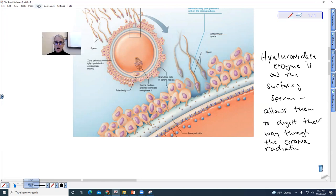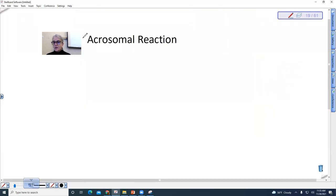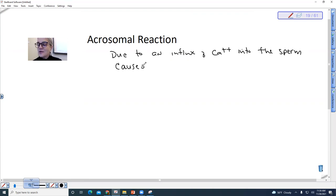So let's go back to our acrosomal reaction. So this acrosomal reaction is due to an influx of calcium ions into the sperm. This causes the release of enzymes from the acrosome.